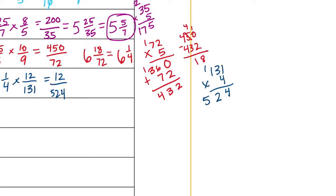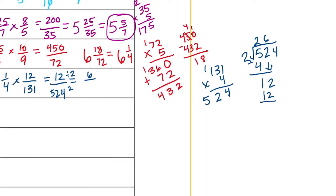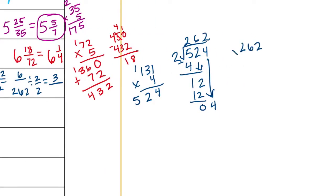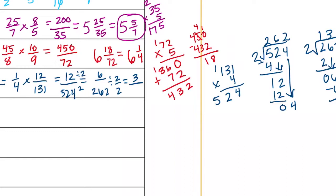We can reduce twelve five-hundred-twenty-fourths — they're both even, so divide by two: twelve divided by two is six, five hundred twenty-four divided by two is two hundred sixty-two. We can divide by two again: six divided by two is three, two hundred sixty-two divided by two is one hundred thirty-one. So we get three over one hundred thirty-one.